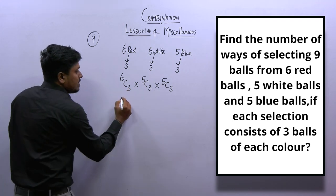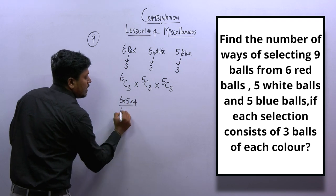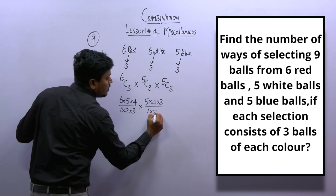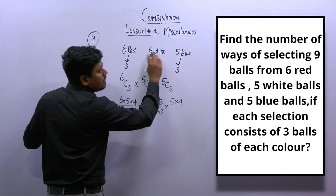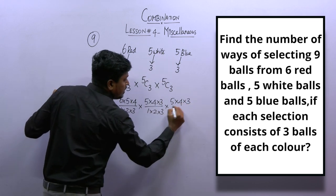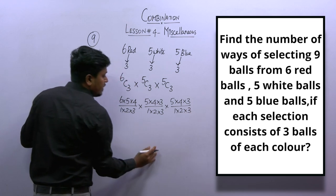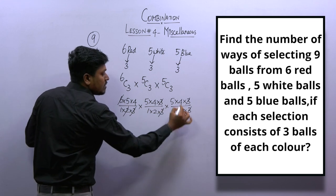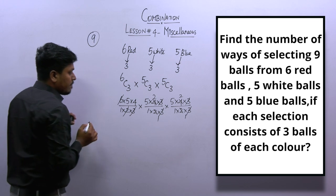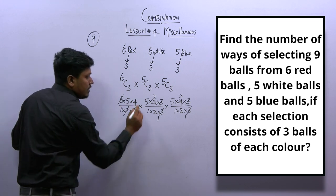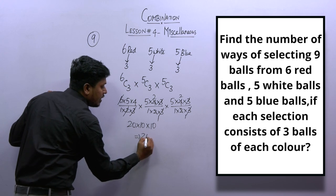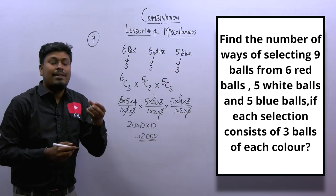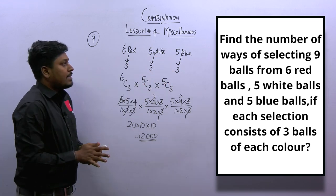6C3 = 6 × 5 × 4 / (1 × 2 × 3) = 20. 5C3 = 5 × 4 × 3 / (1 × 2 × 3) = 10. The other 5C3 is also 10. Cancelling: 3 × 2 = 6, giving 20 × 10 × 10 = 2000. So the answer to question number 3 is 2000 ways to select 9 balls with 3 of each color.